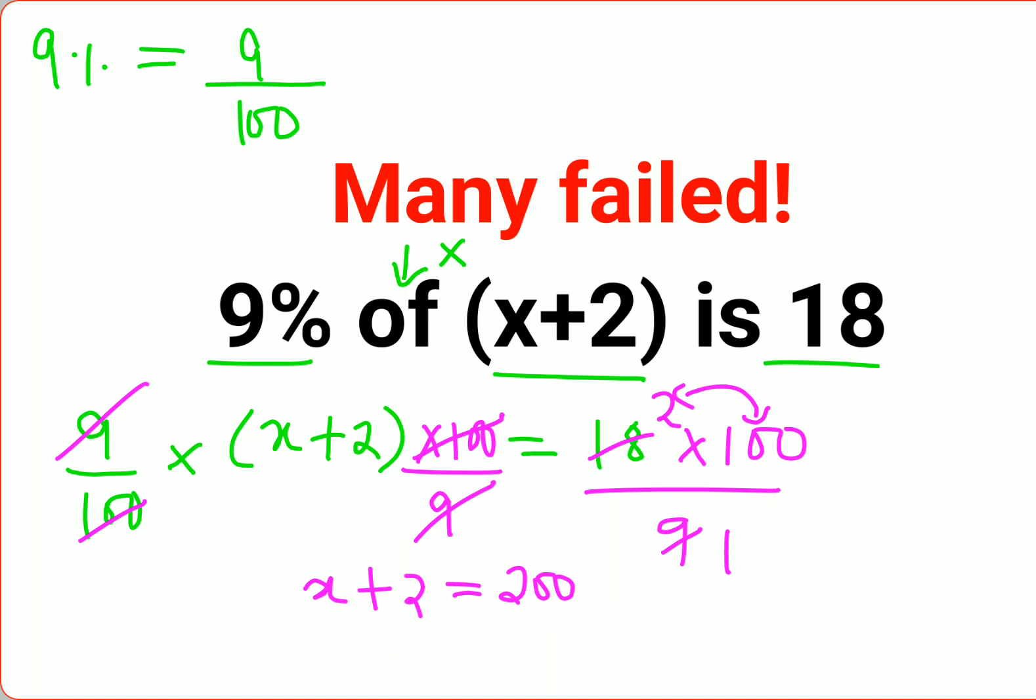So now in order to find the value of x, you will subtract both sides by 2. Therefore, I can say x equals to 200 minus 2. The answer comes out to be 198.